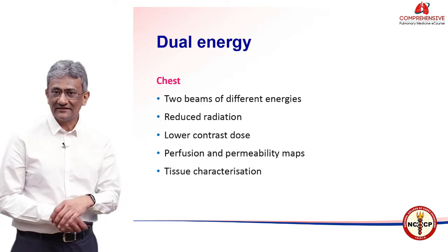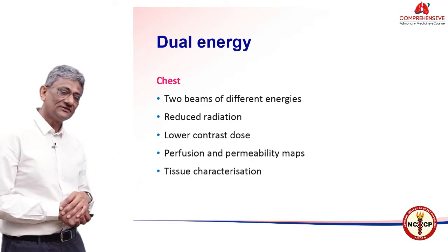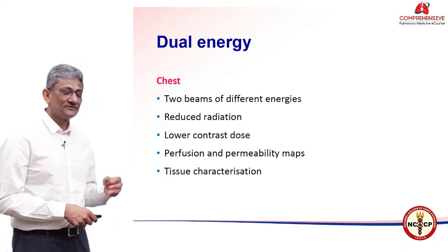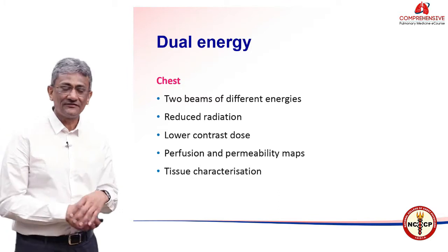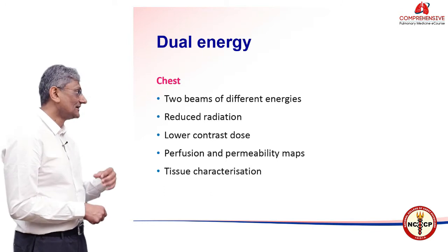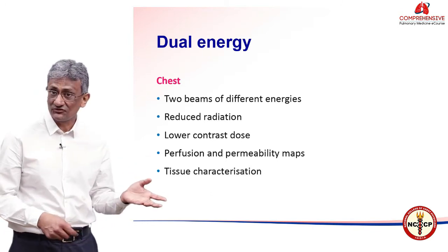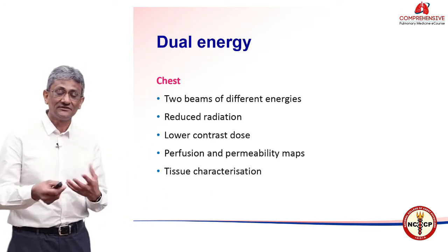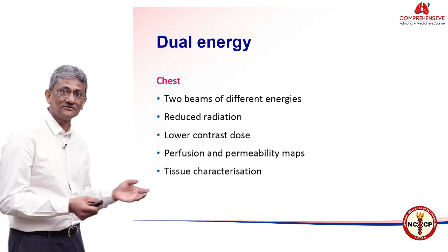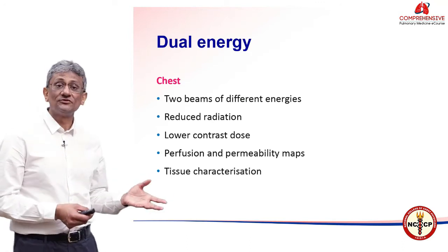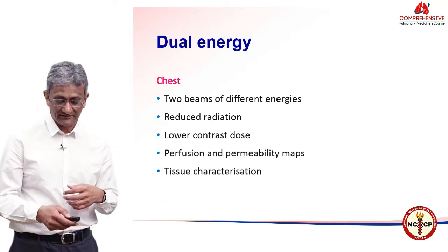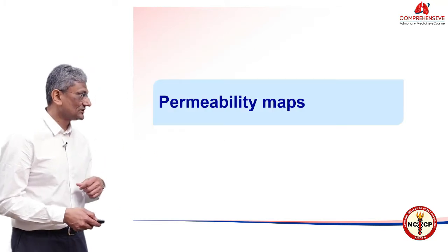Dual energy scanners have allowed us to use contrast even better. Typically we have two beams of different energies, perhaps at 80 kV or 120 kV. This allows us to use less radiation during the scan and lesser contrast — if we were using 80 to 100 cc for a traditional CT scan, we can go down to 50 or 60 ml. We can also do perfusion and permeability maps and tissue characterization.